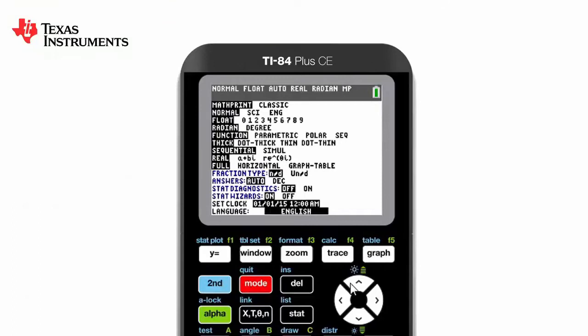You will notice that the calculator is currently in math print, which is a much nicer, more natural way of seeing the calculations. The answers are given as normal values rather than in scientific or engineering mode, and we are on float rather than giving our answers in a certain number of decimal places.